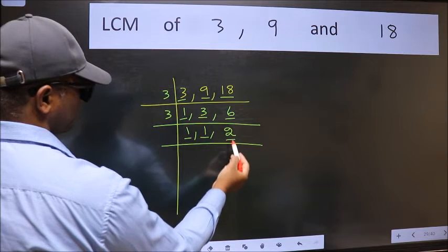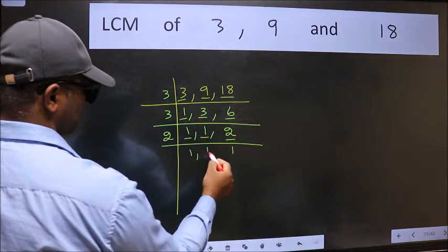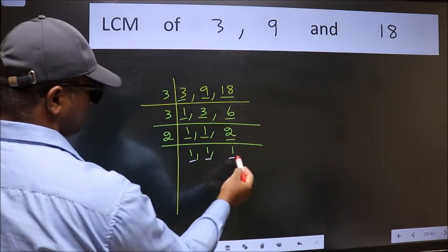So focus on the next number 2. 2 is a prime number, so 2 into 2. So we got 1 in all three places.